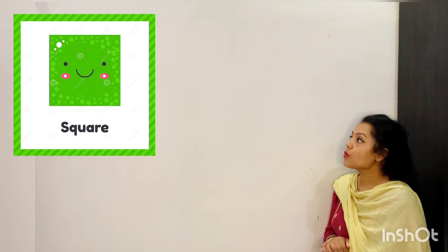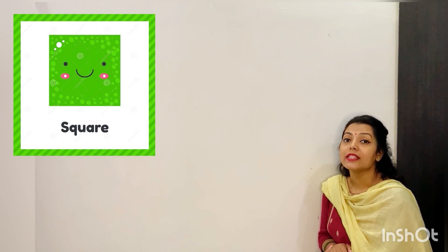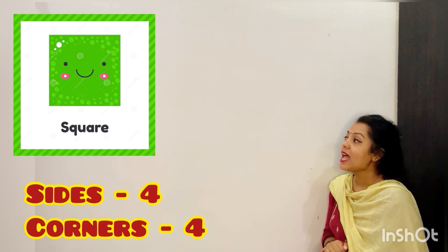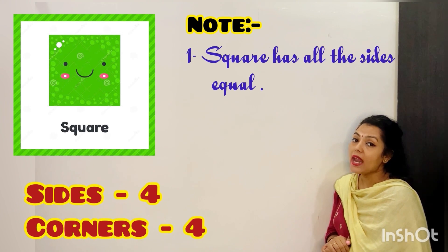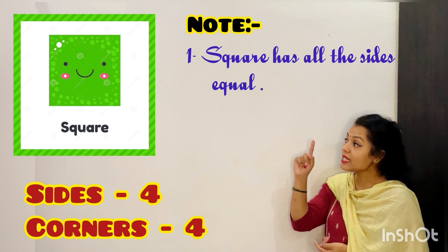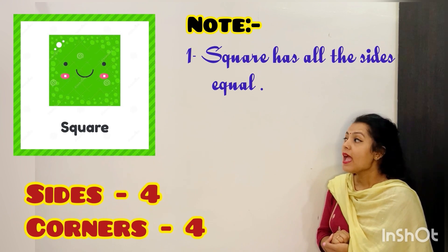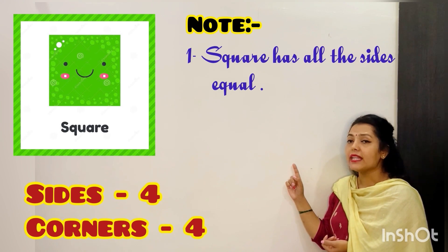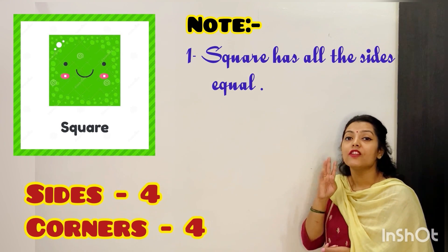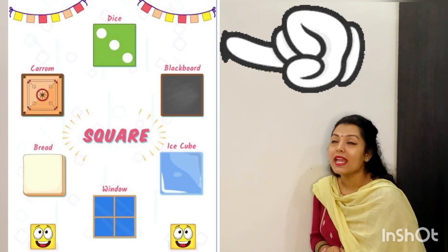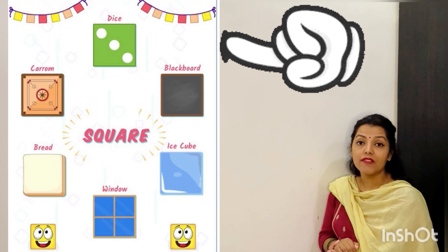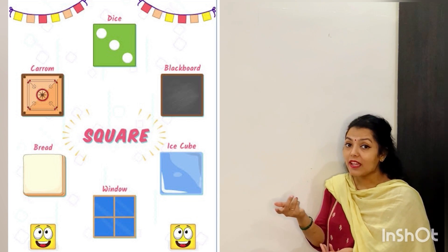Next we have square. The square has 4 sides and 4 corners. And you know what? Square has all the sides equal. If one side is 3 cm, then the other sides will also be 3 cm. Now let's see some examples of square. We have dice — we play Ludo with this dice.